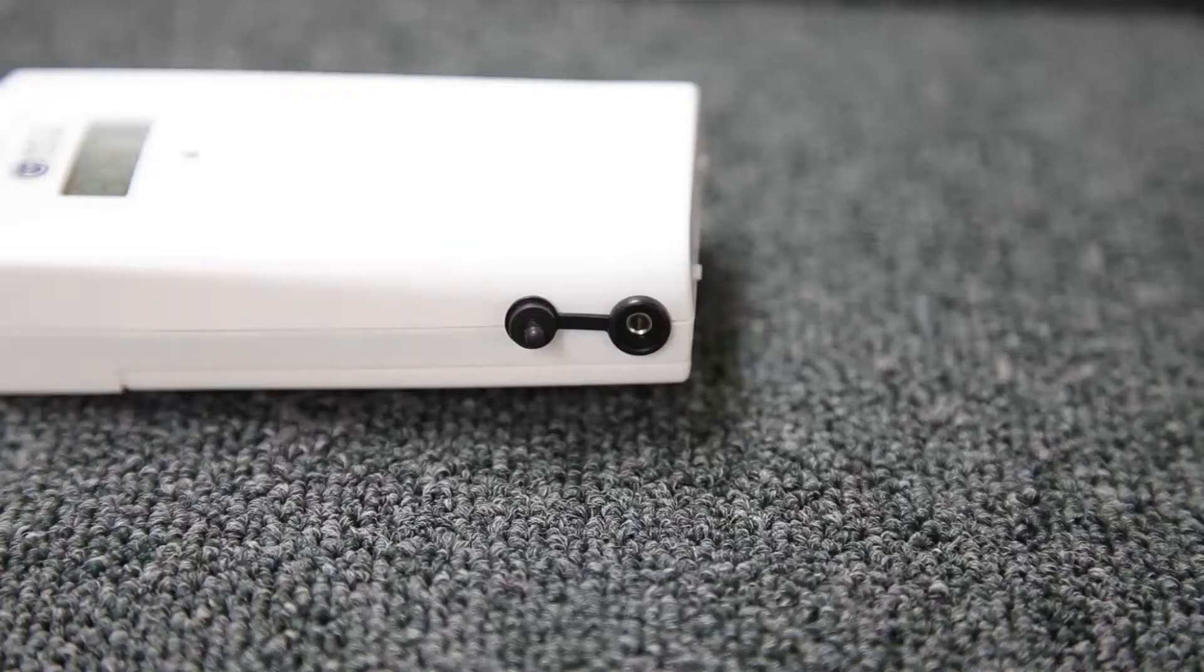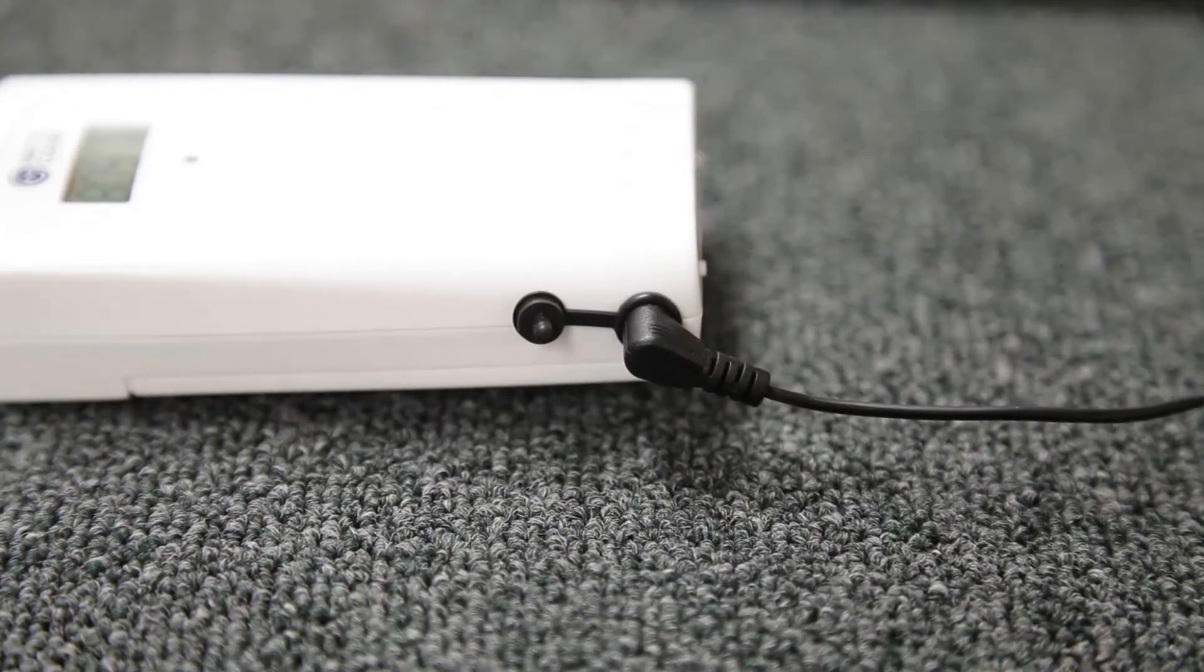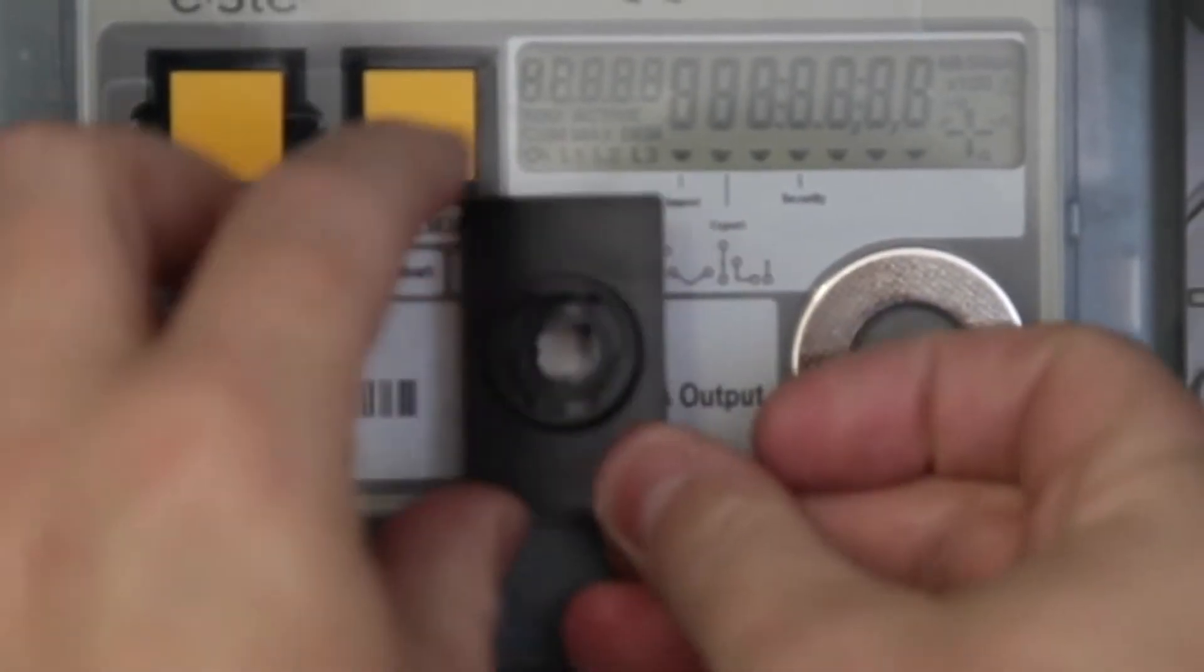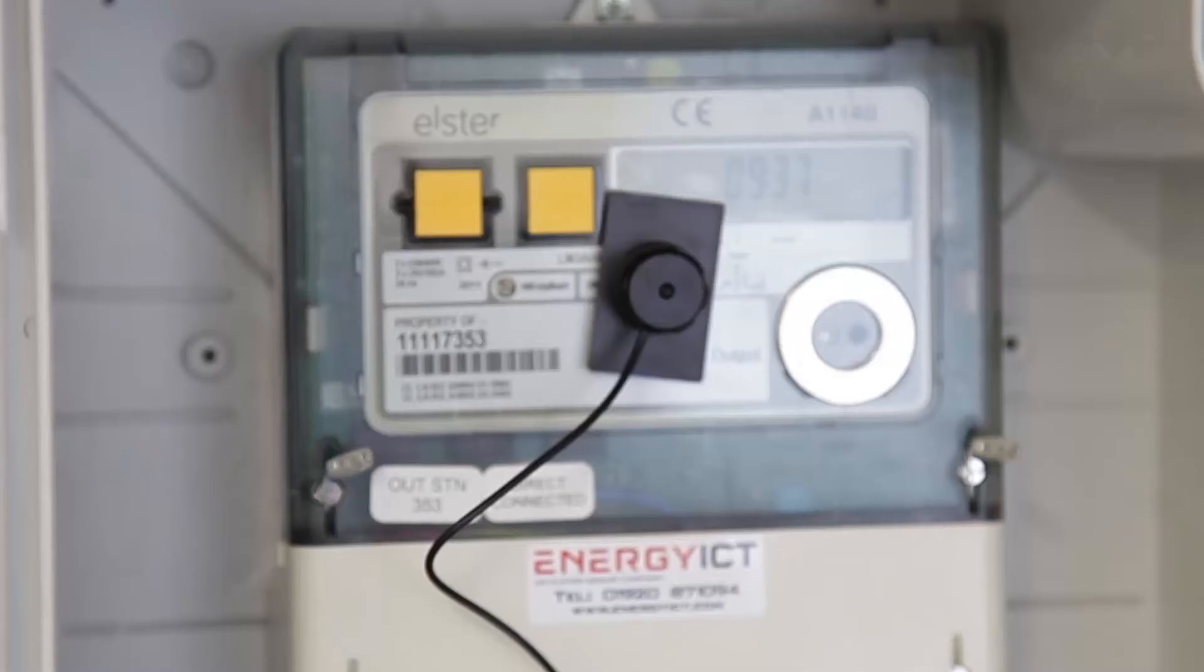Next we need to take the LED sensor and insert it into the transmitter. This reads the pulses from your system and sends them to the receiver. Place the mounting plate onto the flashing LED on your system and then attach your sensor.